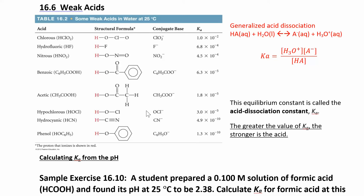Now that we've looked at strong acids, we can take a look at weak acids. Weak acids don't dissociate completely — they only partially dissociate. Depending on their Ka value, you can see how strong of a weak acid you have.